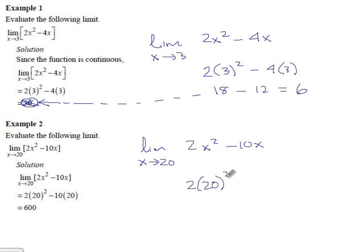2 times 20 squared minus 10 times 20. 20 squared is 400. Double that, you get 800 minus 200 should be 600, and this time they got it right.